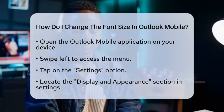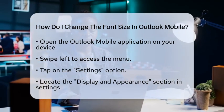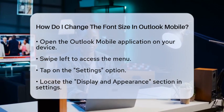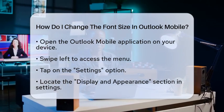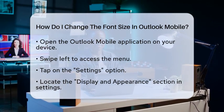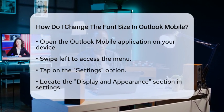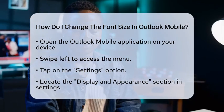First, open the Outlook Mobile application on your device. Once you are in the app, swipe left to access the menu. You will see a variety of options there — look for the Settings option and tap on it.